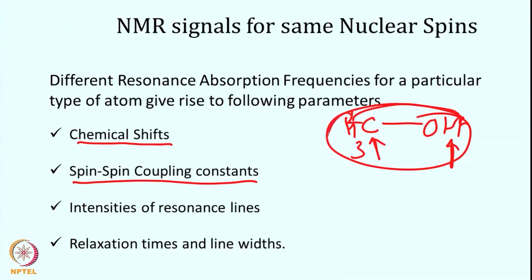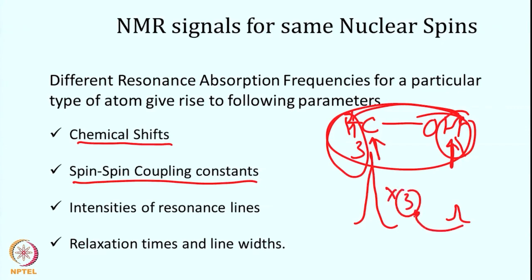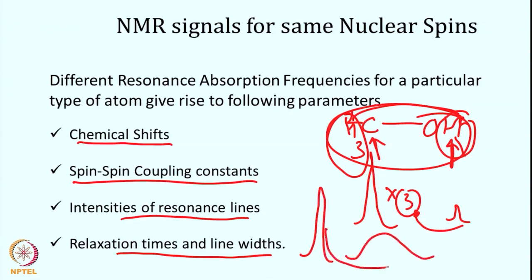Third, intensity: methanol has three protons on CH3 and one on OH, so the CH3 signal intensity should be three times larger than the OH signal. The intensity of a resonance line gives information about the number of protons contributing to that signal. Fourth, relaxation time and line width: for some protons the line can be very sharp, for others broad, giving information about local site dynamics. These four pieces of information — chemical shift, spin-spin coupling, intensity, and relaxation — help us understand structure, chemical environment, neighboring effects, and relaxation properties.